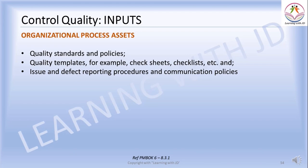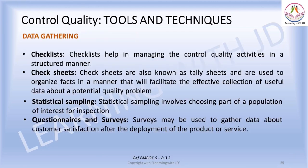Let's see what are the tools and techniques for controlling your quality. Data gathering — we have seen this before. We know checklists and check sheets, and statistical sampling. For example, if there is an order to create an entire building and you just created a wall, you check the wall to see if the quality of the cement throughout the building is fine. That is statistical sampling.